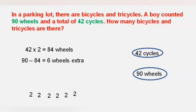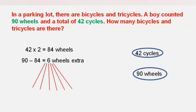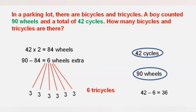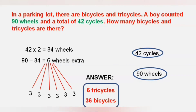Now let us distribute these extra 6 wheels to 6 cycles of 2 wheels each, which gives you 6 tricycles. That means there are 6 tricycles and also 42 minus 6, that is 36 bicycles. Therefore the answer is 6 tricycles and 36 bicycles.